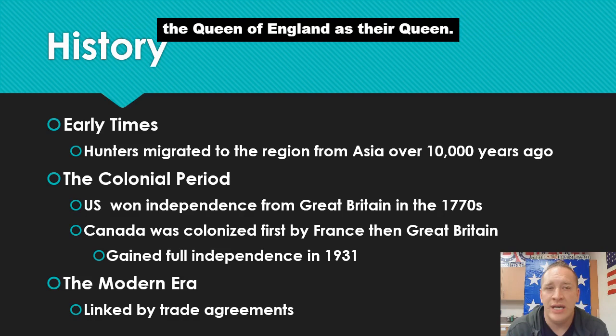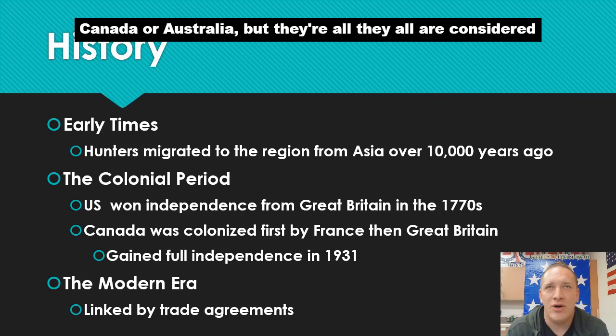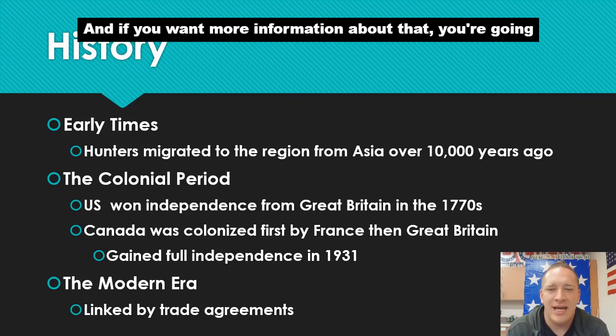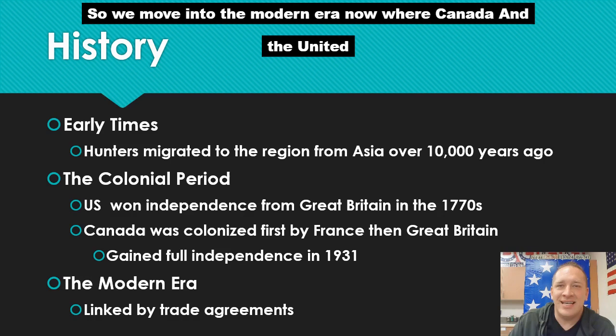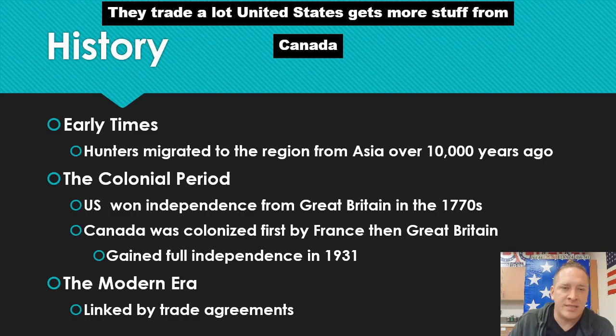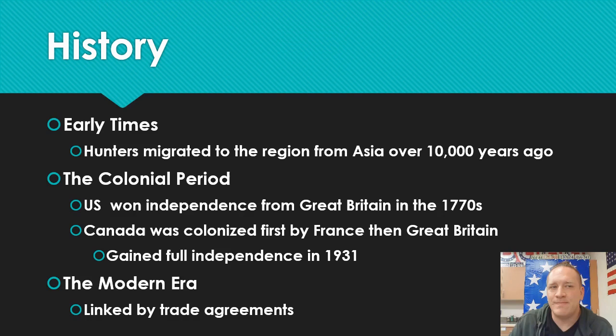Technically, Canada does still honor the Queen of England as their queen — Australia is the same way. They have a completely separate government and the Queen doesn't have any power over Canada or Australia, but they're all considered part of the commonwealth. In the modern era, Canada and the United States are the biggest trading partners for each other. Very close ties, very close friendship between the two countries — very culturally linked.